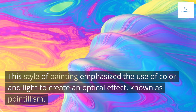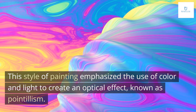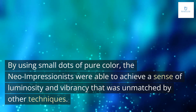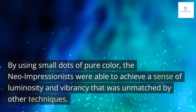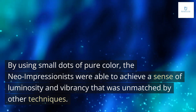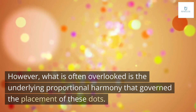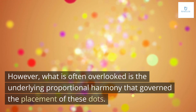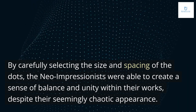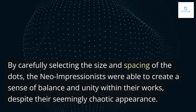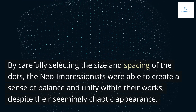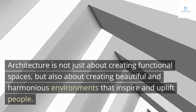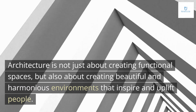One notable example is the Neo-Impressionist movement, which emerged in the late 19th century. This style of painting emphasized the use of color and light to create an optical effect known as pointillism. By using small dots of pure color, the Neo-Impressionists were able to achieve a sense of luminosity and vibrancy unmatched by other techniques. However, what is often overlooked is the underlying proportional harmony governing the placement of these dots — by carefully selecting the size and spacing of the dots, the Neo-Impressionists created a sense of balance and unity within their works despite their seemingly chaotic appearance.